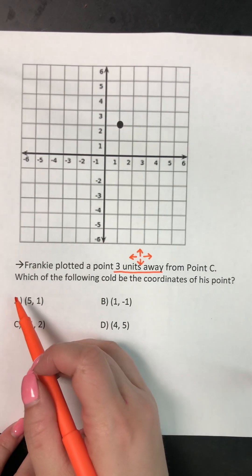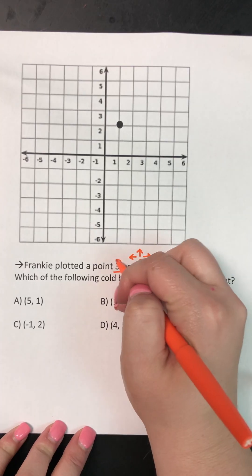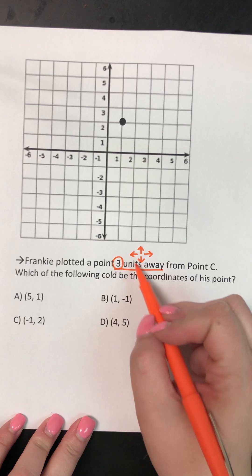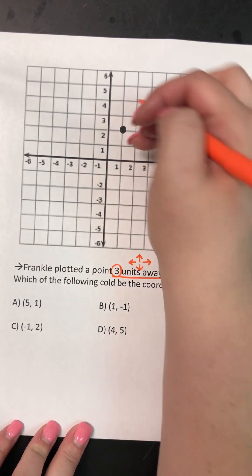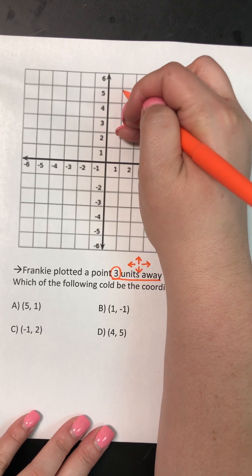So it says which of the following could be the coordinates of his point? So what I'm gonna do is I'm gonna go find three units away from point C in all of these directions. So I start at point C here, and I'm gonna go up three. One, two, three,